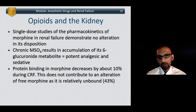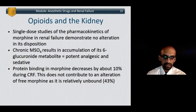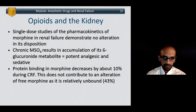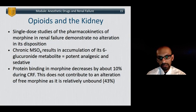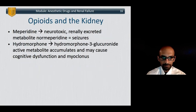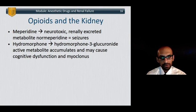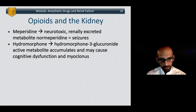Moving on to opioids: single-dose pharmacokinetic studies of morphine in renal failure demonstrate no alteration in its disposition overall. However, it accumulates an active metabolite — morphine-6-glucuronide — which has analgesic and sedative effects. That's why morphine is not a particularly good choice in patients who can't clear drugs renally. Protein binding of morphine decreases by about 10%, but this doesn't contribute significantly to alteration of free morphine since it's relatively unbound. Meperidine should also be avoided because its metabolite normeperidine can cause seizures if it builds up in patients with renal insufficiency. Hydromorphone produces hydromorphone-3-glucuronide, an active metabolite that can cause cognitive dysfunction and myoclonus, and can build up in renal failure.